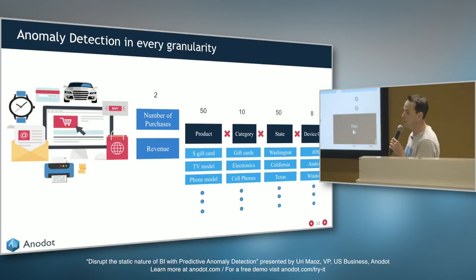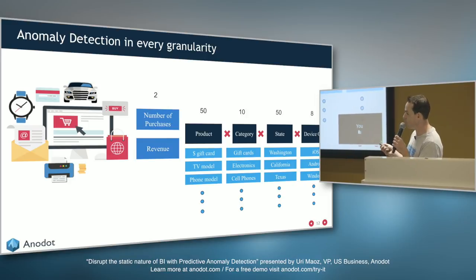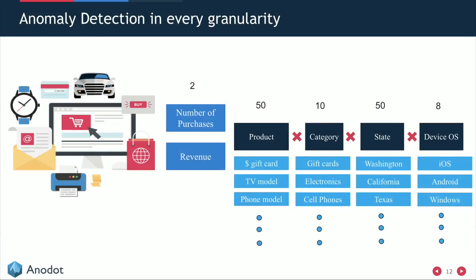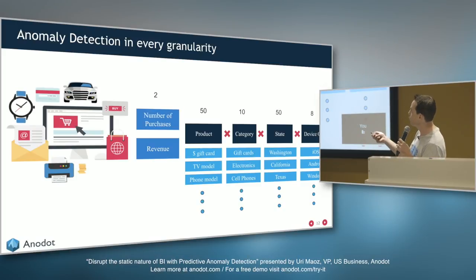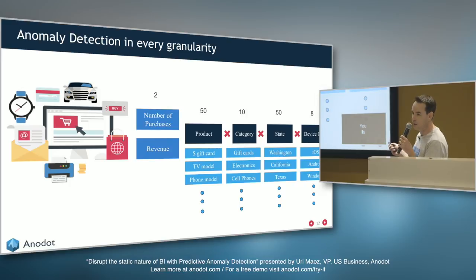For example, an e-commerce site tracking just two metrics — number of purchases and revenue — across dimensions like product (50), category (10), state (50), and device OS (8) generates 400,000 metrics. That's 400K metrics for just two business measures. Companies today push millions and millions of metrics at very low granularity to Anodot.